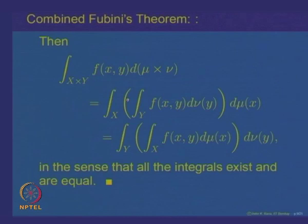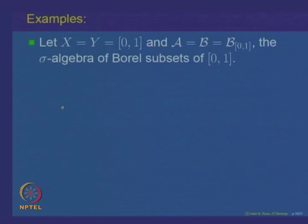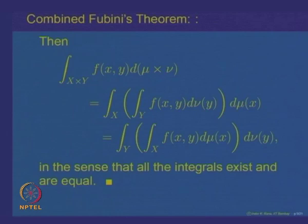This is the Combined Fubini's Theorem and it is of importance. We will see many applications soon. Let us now look at some examples. Note that in the statement of the theorem, we assumed that μ and ν are sigma finite measures — these conditions are important. Let us look at examples to illustrate this.